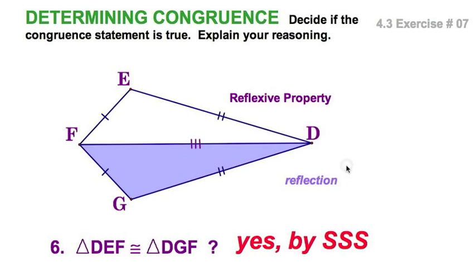This triangle is not congruent, or these triangles are not congruent by reflection. They're congruent by side, side, side. They happen to be reflections of each other.